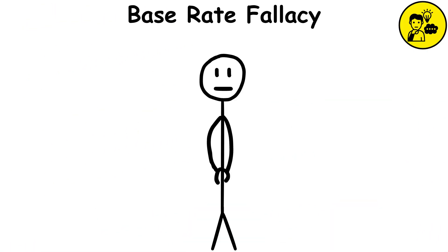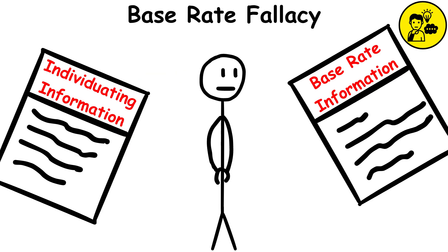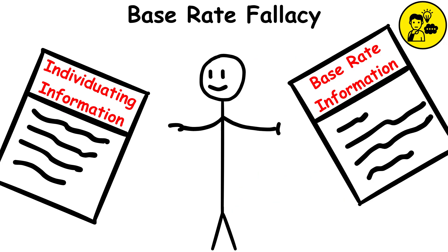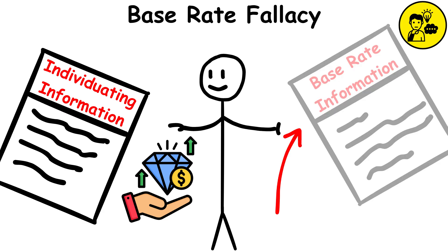Base rate fallacy. When provided with both individuating information, which is specific to a certain person or event, and base rate information, which is objective statistical information, we tend to assign greater value to the specific information and often ignore the base rate information altogether.